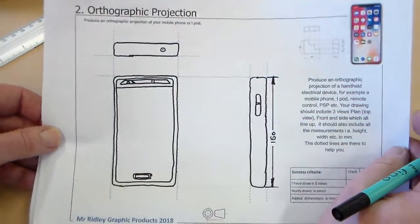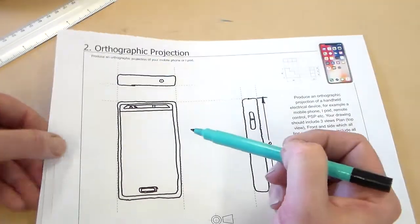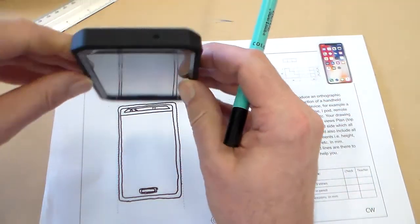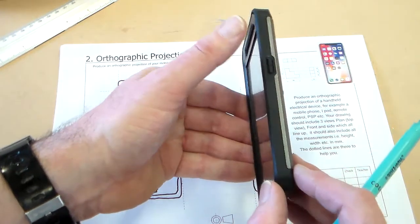So there are the three orthographic views. We've got the plan view, which was there. We've got the front view, and we've got the side view.